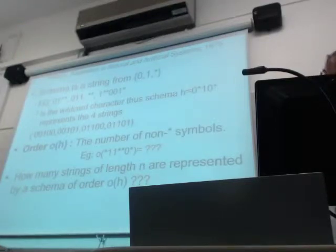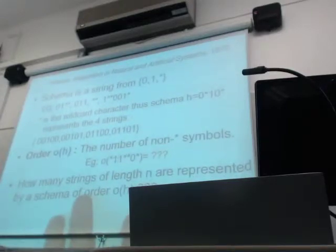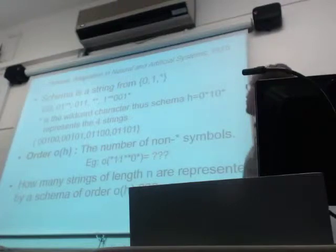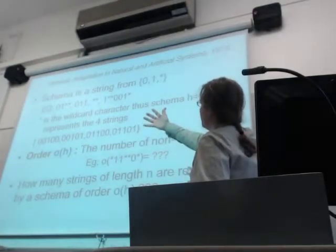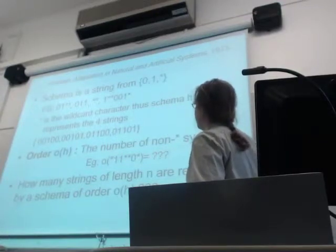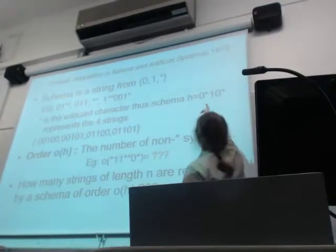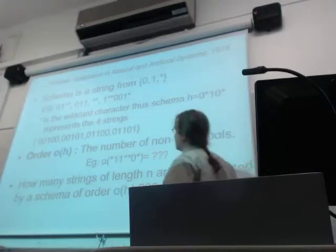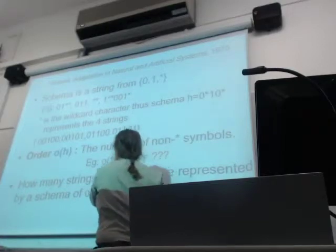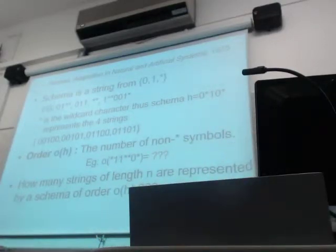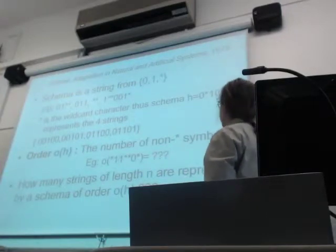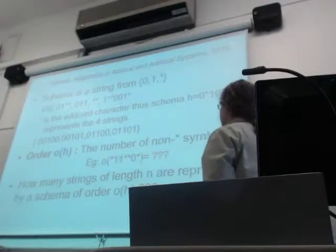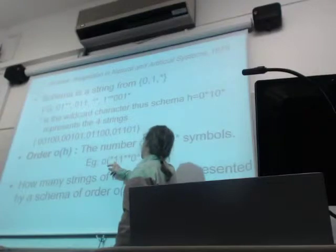A schema, for binary strings, is expressed with three symbols: 0, 1, and star. For those familiar with regular expressions: 0 matches 0, 1 matches 1, and star matches either 0 or 1. For example, the schema 0, star, 1, 0, star matches four strings. The order of a schema is the number of non-star symbols within it.